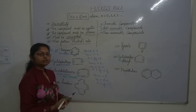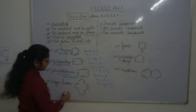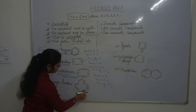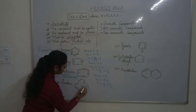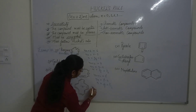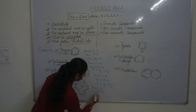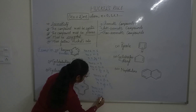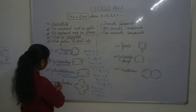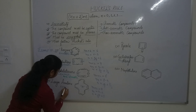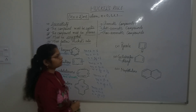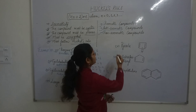A ring with 14 electrons — counting 7 pairs of pi electrons gives 14 total electrons. For (4n + 2) = 14: 4n = 12, so n = 3, which is a positive integer. Therefore, larger annulenes having 14 pi electrons are aromatic in nature.